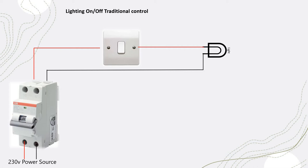Moving on to the wiring part, we start with the traditional lighting control. Everyone has seen this conventional switch in every house — this is a one-gang switch controlling only one light. From the electrical distribution board, you take the live wire to the switch, and from the switch the live goes to the light. The neutral is pulled directly to the power source, so you're controlling the on/off of the light directly through the switch.